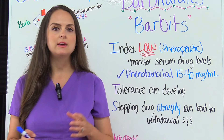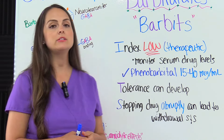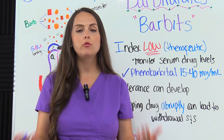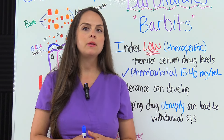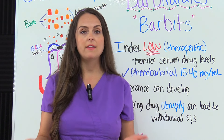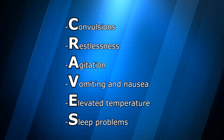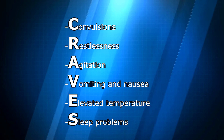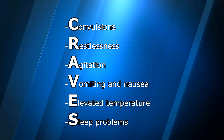S — stopping the drug abruptly can lead to withdrawal signs and symptoms ranging from mild to severe, typically occurring as soon as 24 hours after the last dose, especially with long-term use. Use the mnemonic CRAVES to remember withdrawal signs: C — convulsions; R — restlessness; A — agitation; V — vomiting and nausea; E — elevated temperature; S — sleep problems. These can progress to shock and death, requiring prompt treatment.